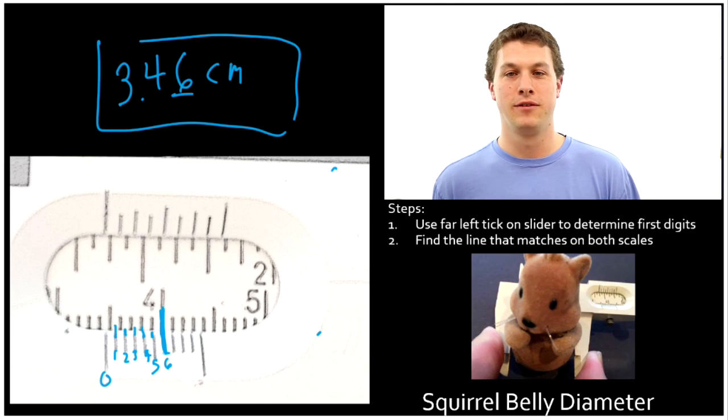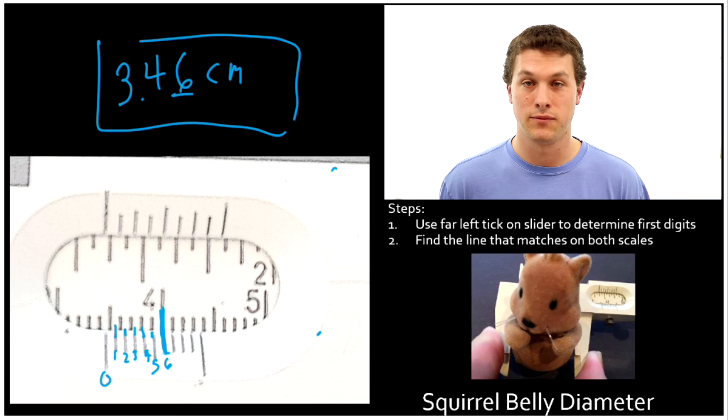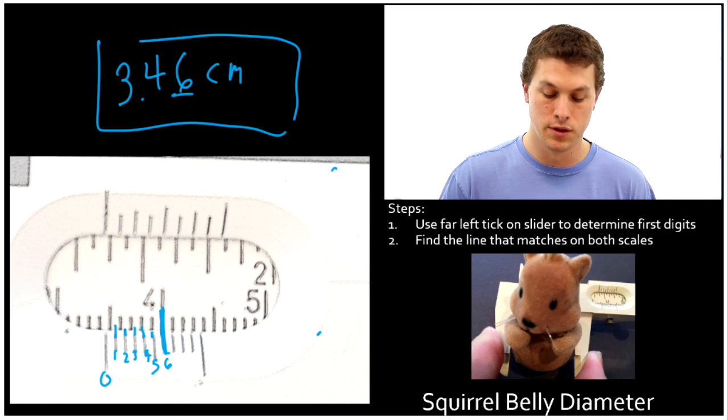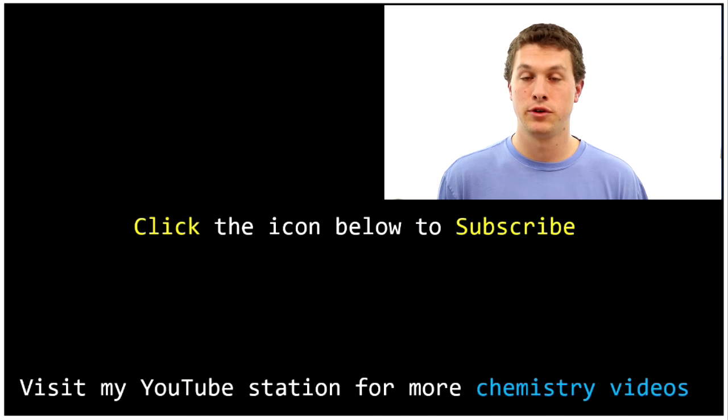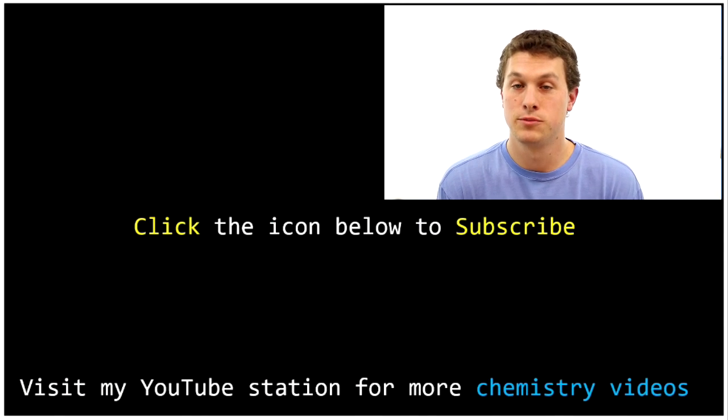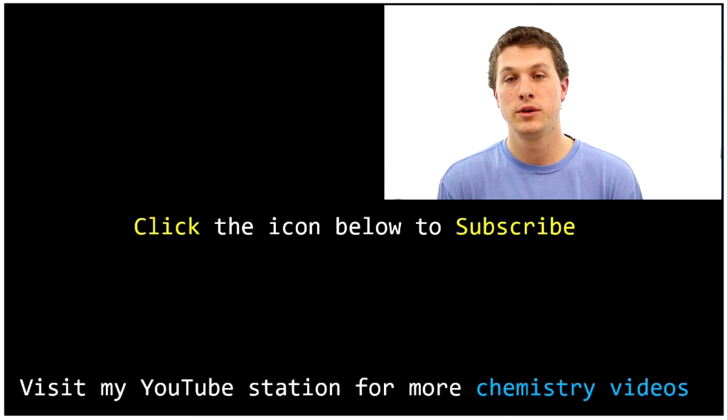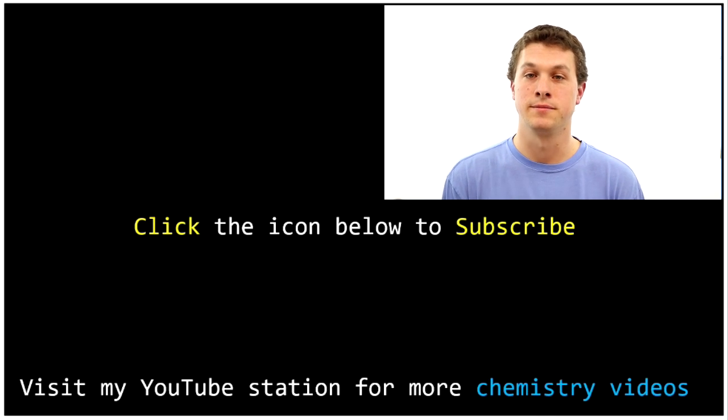Hopefully you can see now how you read vernier calipers to the correct number of significant figures. They're a little tricky at first, but once you get them down, they're super useful measuring tools. Thanks for watching this episode of Real Chemistry. Click on the Real Chemistry icon below to subscribe or check out another one of my videos. You can always visit my channel to see my full collection.